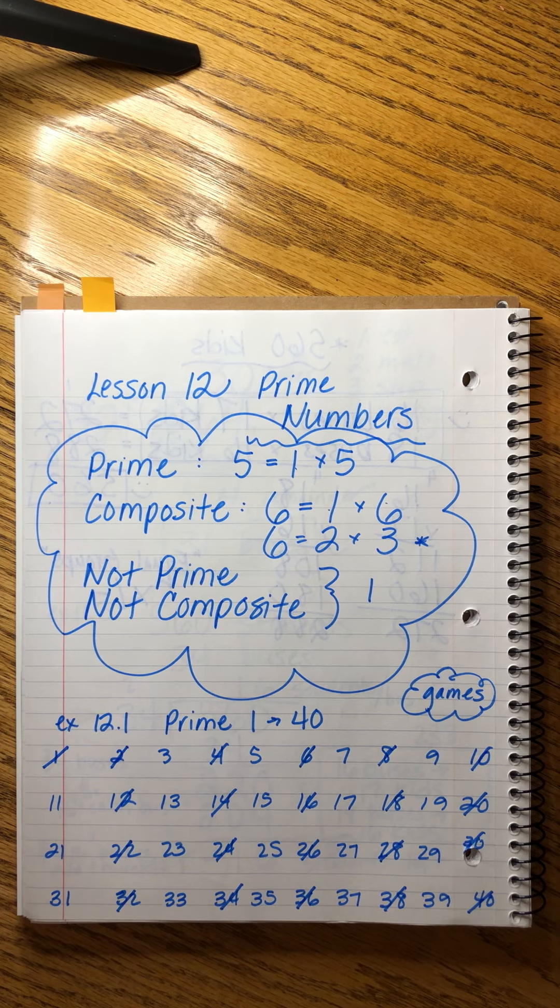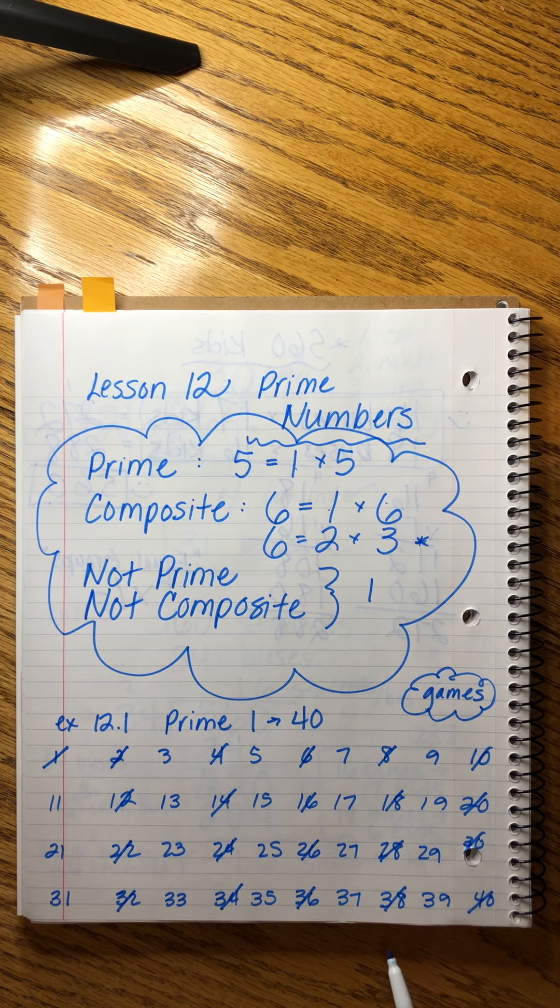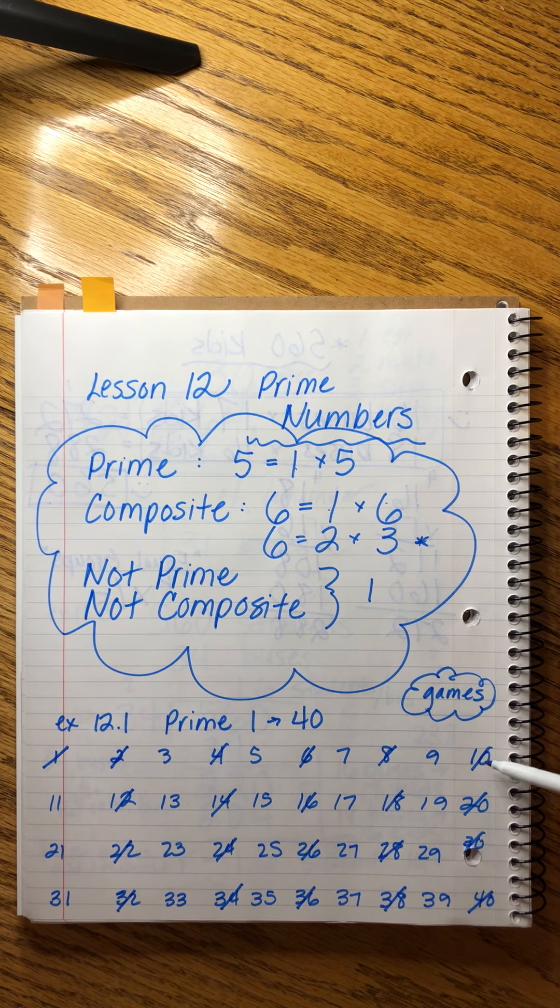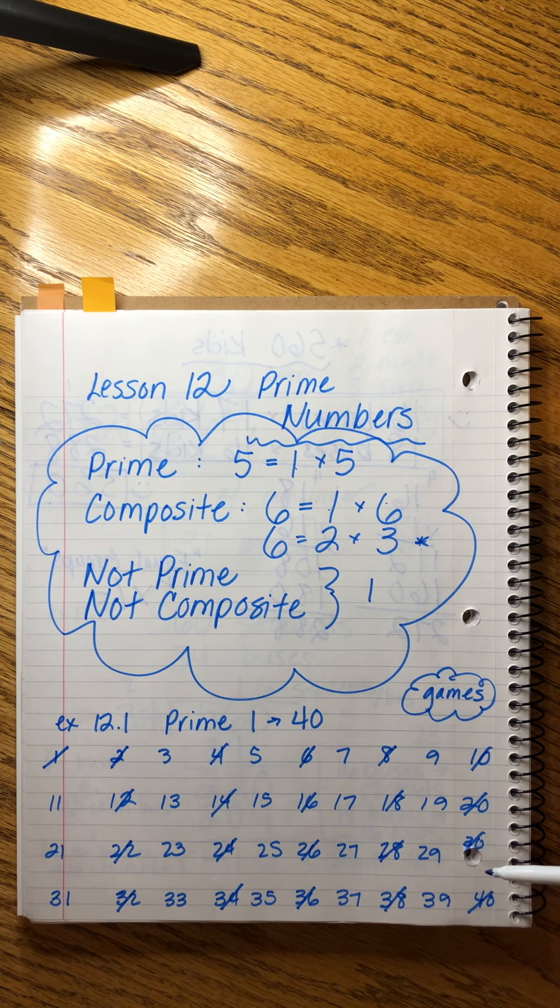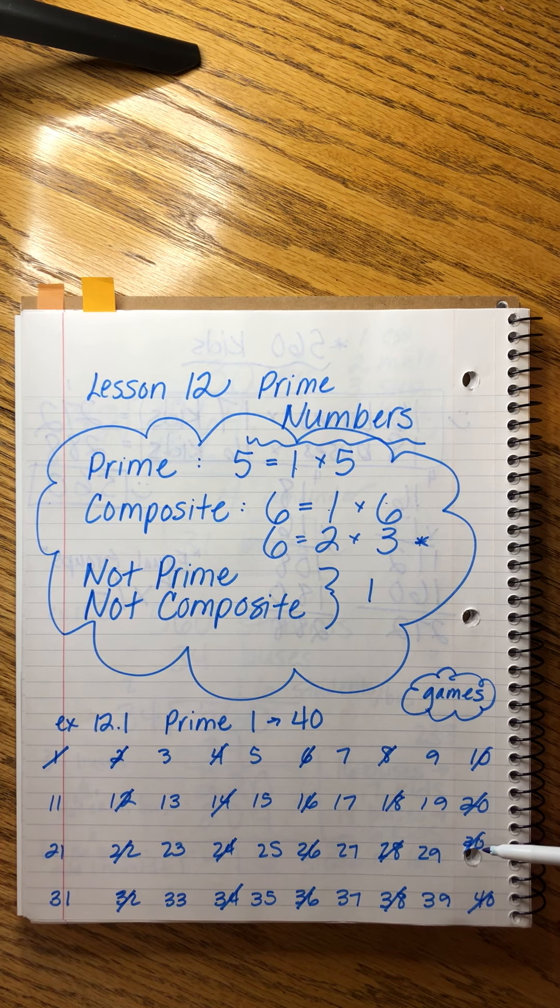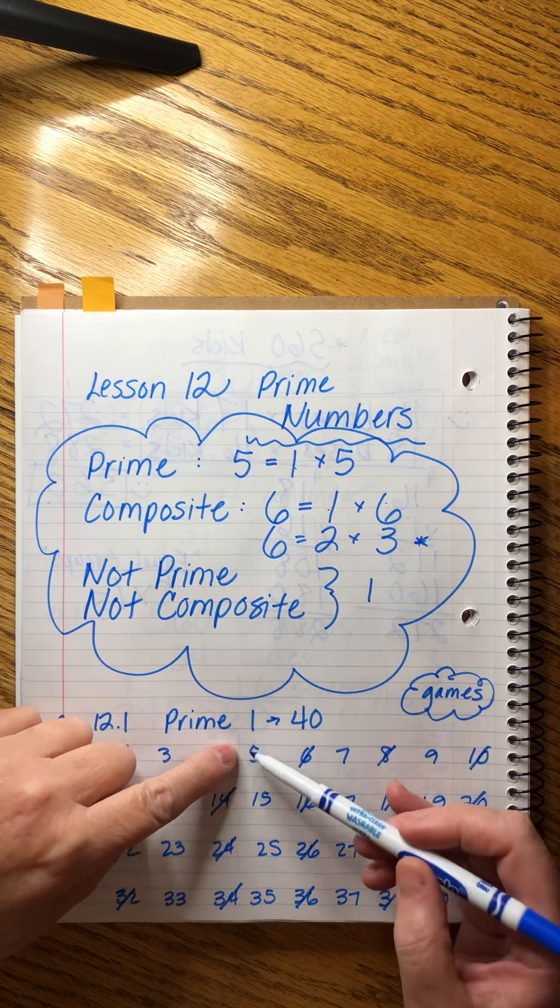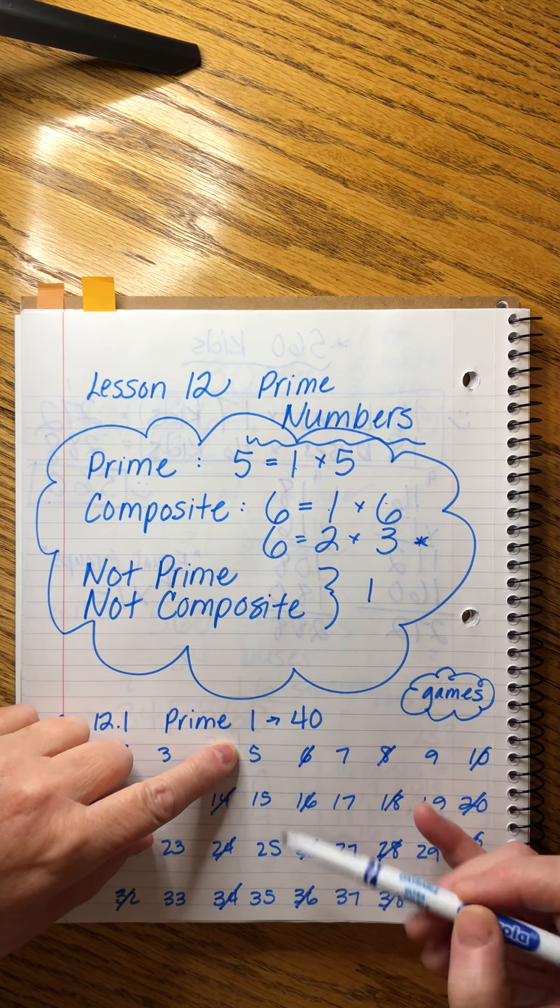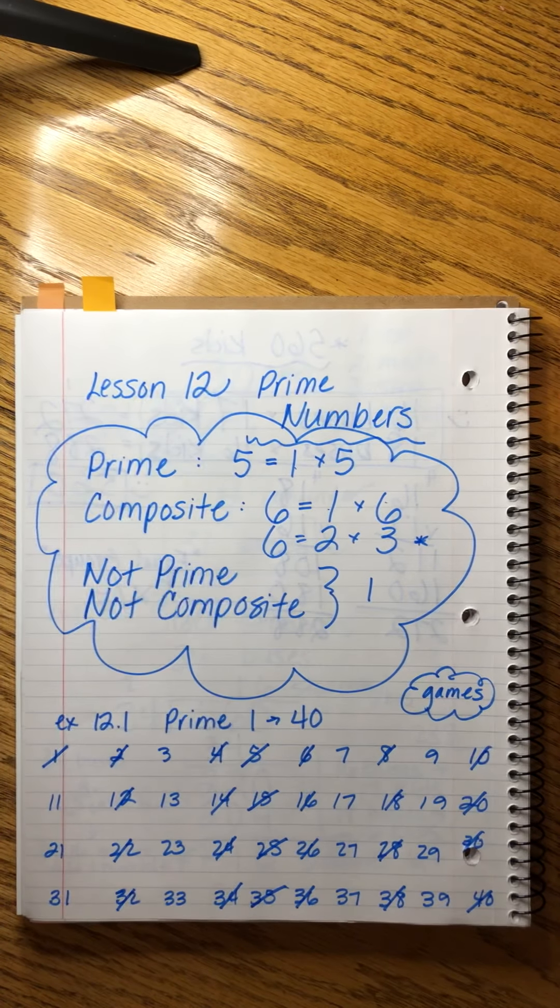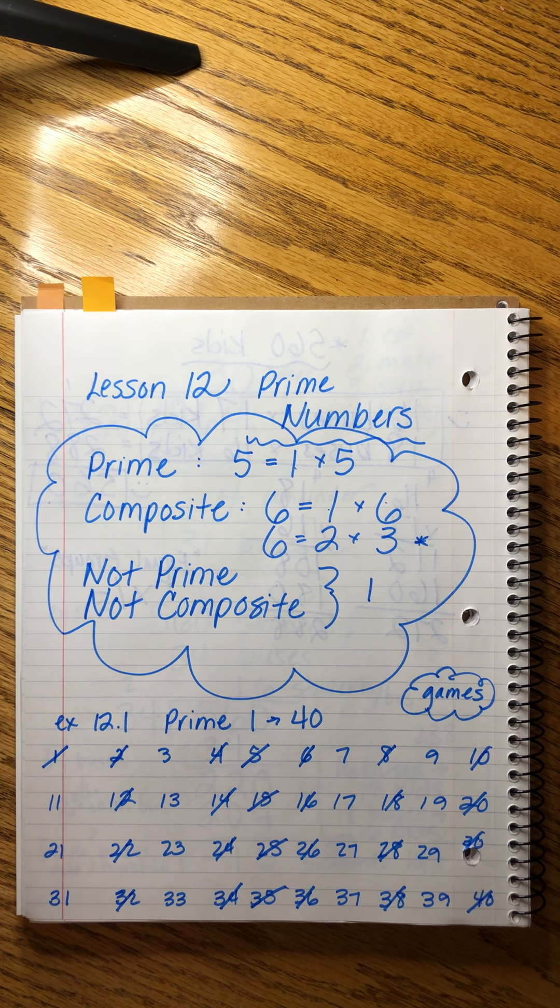I've crossed out all the twos. Now I'm going to think of our other rules. Dividing by 10 means that it has a zero at the end, but look, we crossed all those off already. Divide by five means that if a number is divisible by five it ends in either five or zero. We've already crossed off all the zeros, but that means we can cross off all these fives. We've covered our rules for twos, tens, fives, and our last rule is for threes.